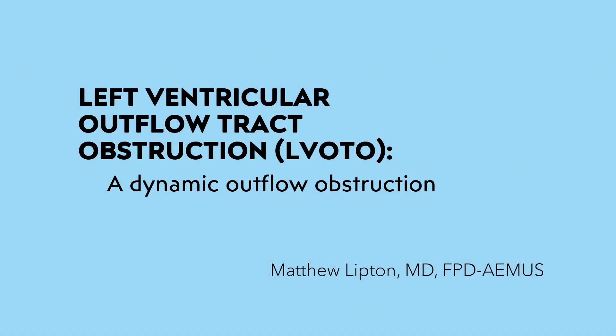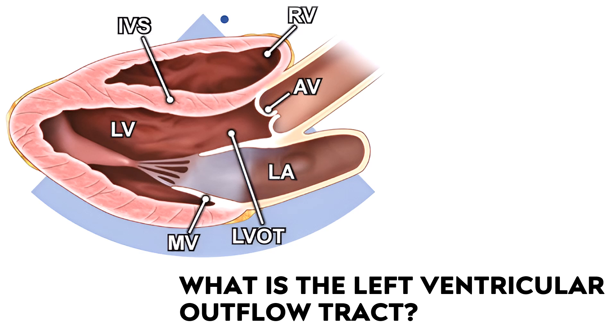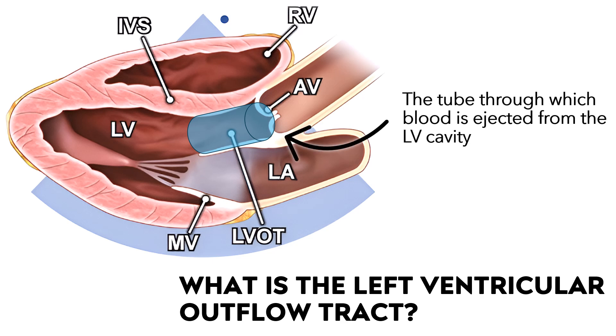Let's talk about the left ventricular outflow tract obstruction, or LVOTO. LVOTO is an under-recognized and seldom discussed condition. It is classically described in hypertrophic cardiomyopathy, but in the emergency department or ICU, LVOTO will most commonly occur in septic shock. The LVOT, or left ventricular outflow tract, is the tube in which blood is ejected from the LV cavity, located in front of the anterior leaflet of the mitral valve.